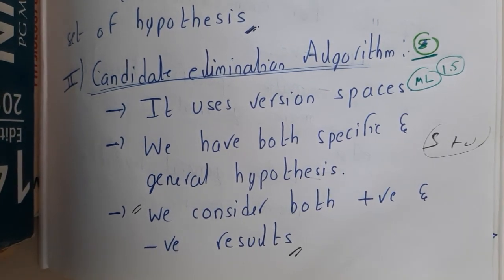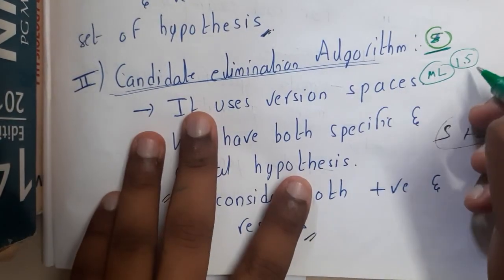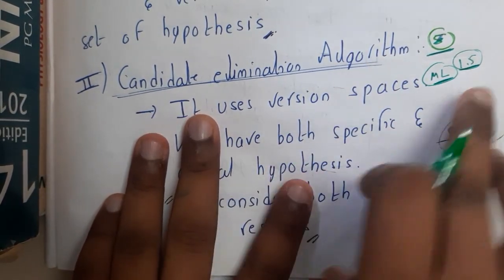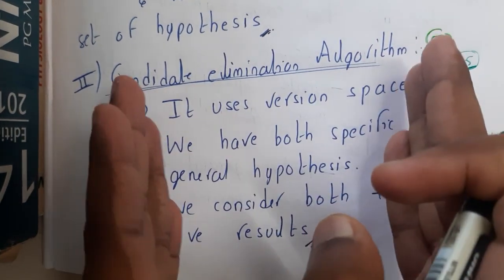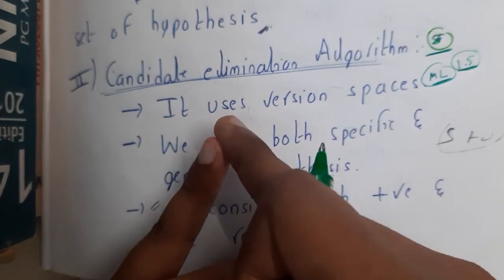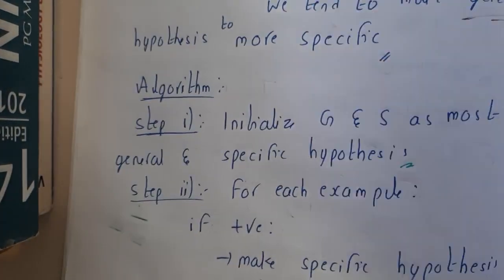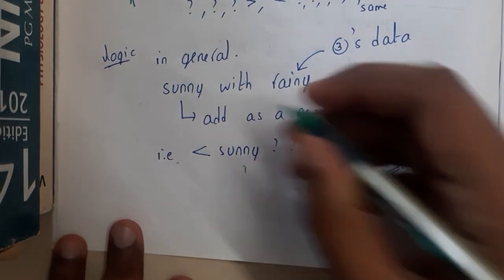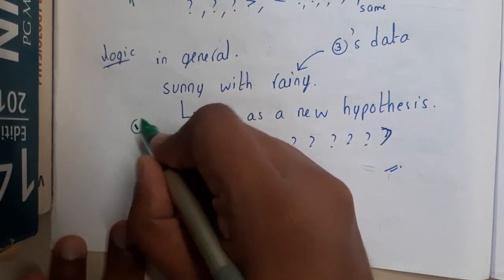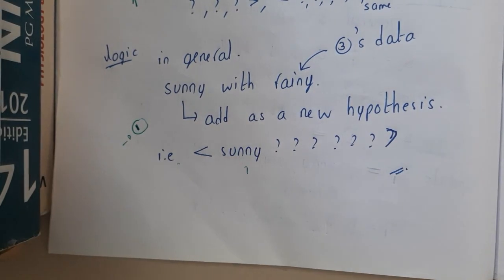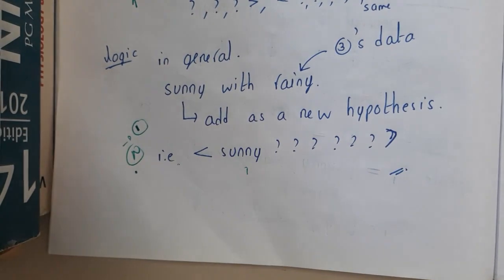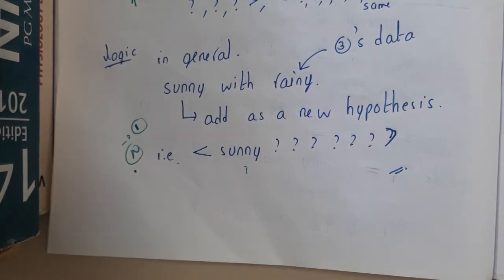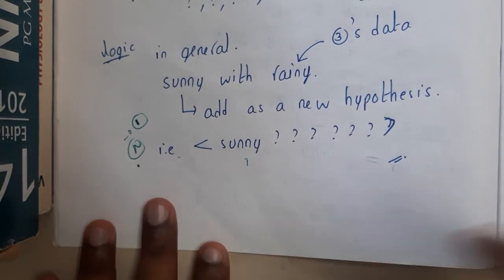Hello guys, this is a small correction video. In machine learning, video 1.5, unit 1, the fifth lecture, we discussed the Candidate Elimination Algorithm. When I explained the algorithm and solved an example, most of you pointed out a small mistake. You are absolutely correct — I forgot to mention one important point, which is why you felt there was a mistake in my notes or explanation. Both are correct, but I need to clarify it.